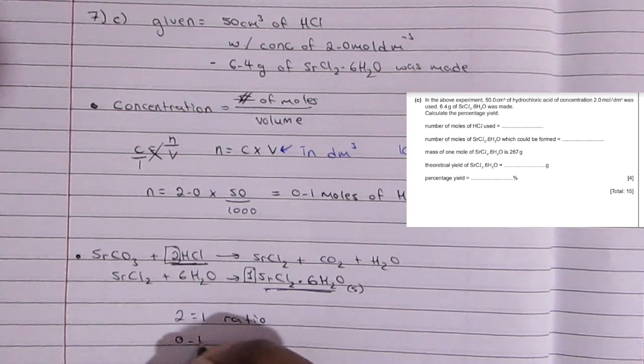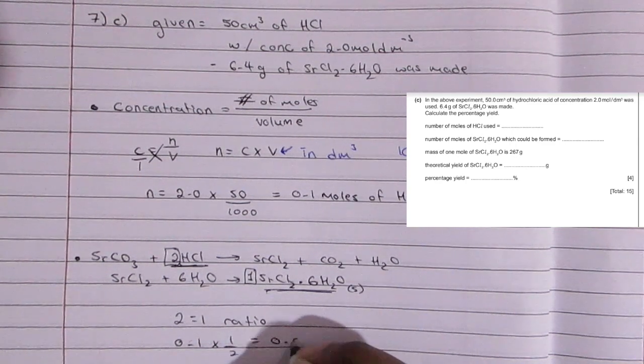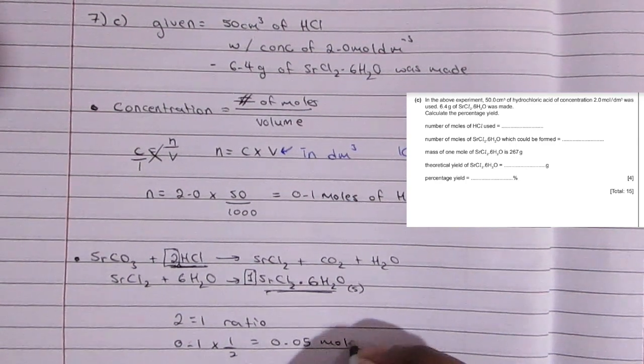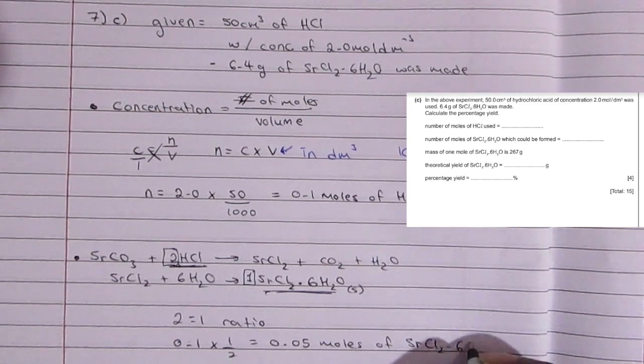So that means whatever you get for the hydrochloric acid, the number of moles for the strontium chloride hexahydrate would be half of that. So 0.1 divided by 2, or 0.1 times half, will give you 0.05 moles of strontium chloride hexahydrate.